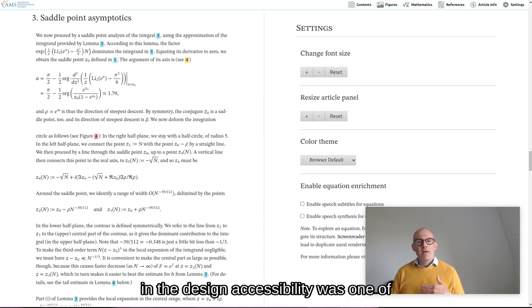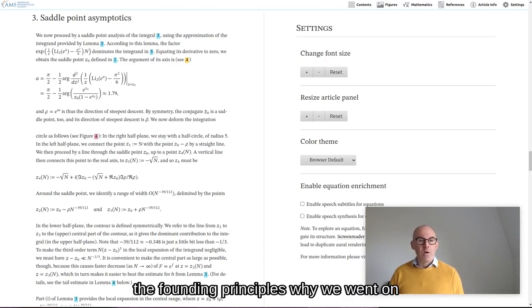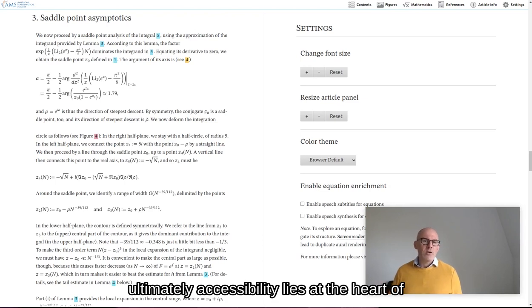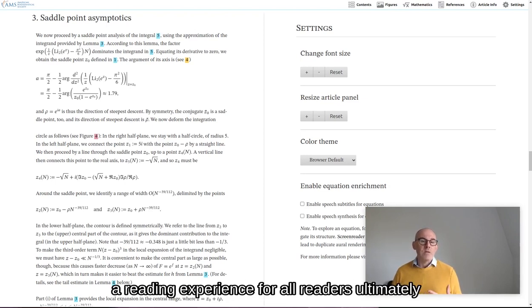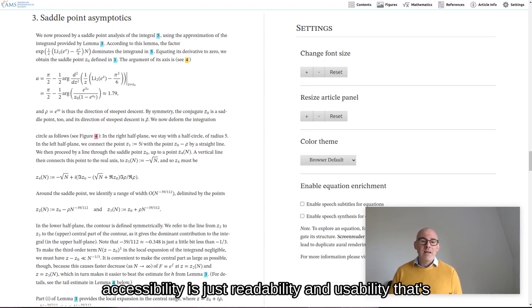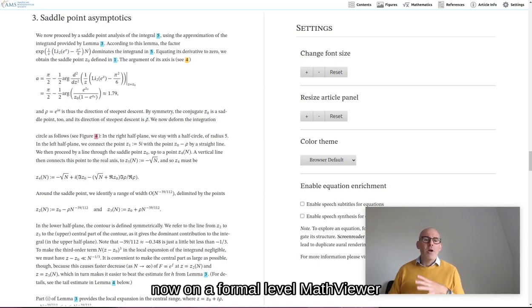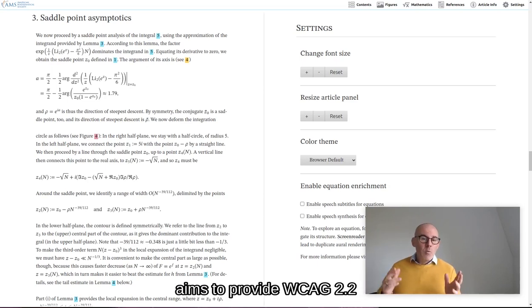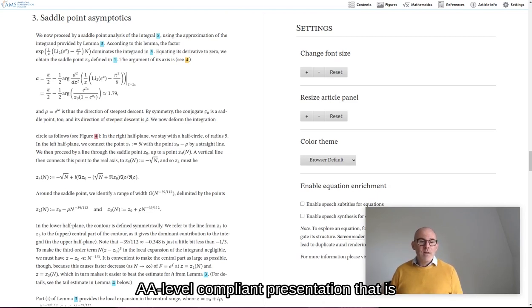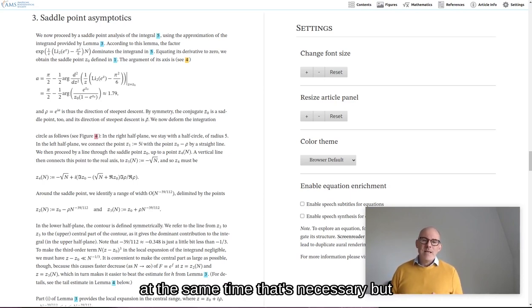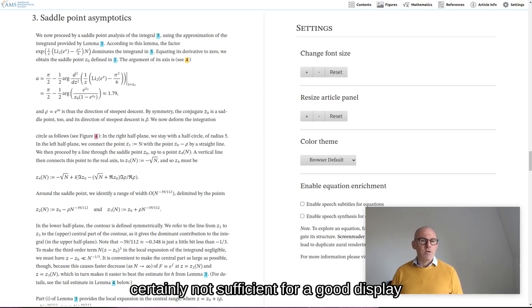In the design, accessibility was one of the founding principles why we went on this adventure to build MathViewer eight years ago. Ultimately, accessibility lies at the heart of a good reading experience. And that is a reading experience for all readers. Ultimately, accessibility is just readability and usability. That's all it is in this context. But of course, just is not a small word here. Now, on a formal level, MathViewer aims to provide WCAG 2.2 AA-level compliant presentation. That is, of course, the legal minimum you would expect, so you shouldn't expect anything less. At the same time, that's necessary, but certainly not sufficient for a good display.